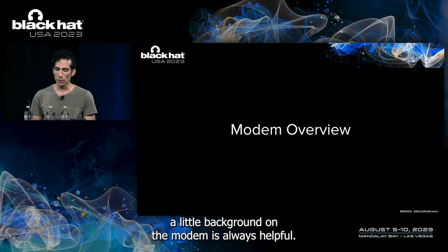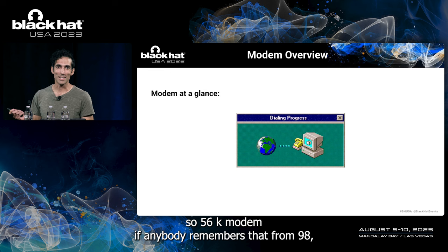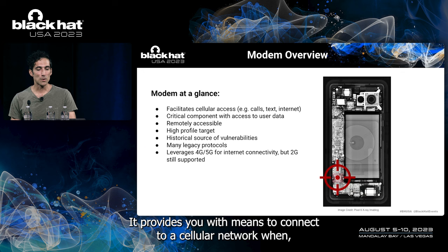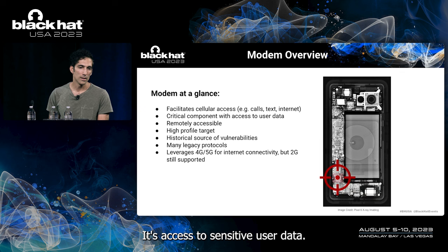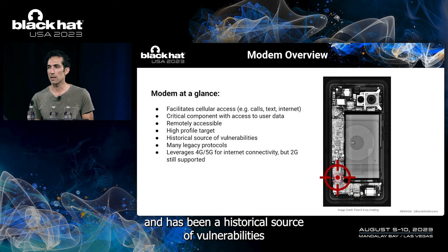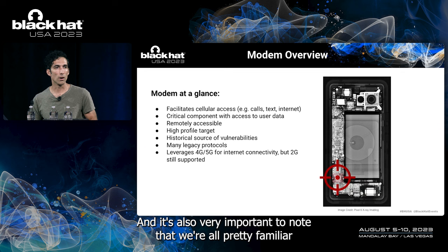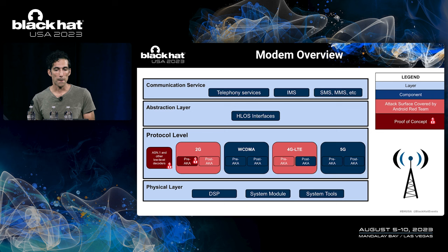A little background on the Pixel modem: it provides you with the means to connect to a cellular network, enabling calls, emails, and web browsing. It's a critical component with access to sensitive user data — a remotely accessible, high-profile target for nation-state actors, and a historical source of vulnerabilities due to many legacy protocols. It's important to note that while we're all familiar with 4G and 5G today, standards like 2G still exist, and this is an important theme throughout this presentation.